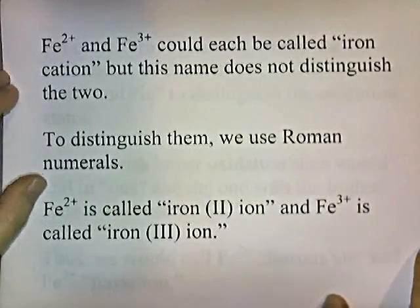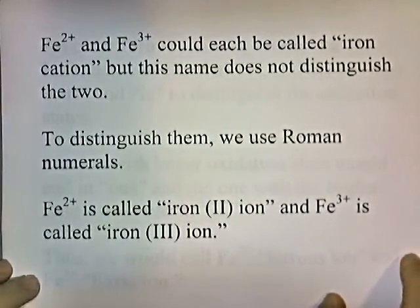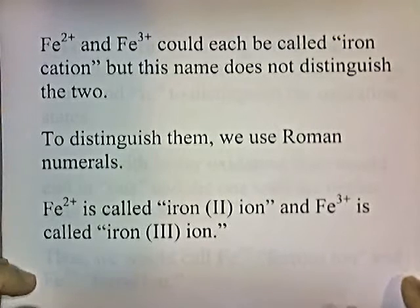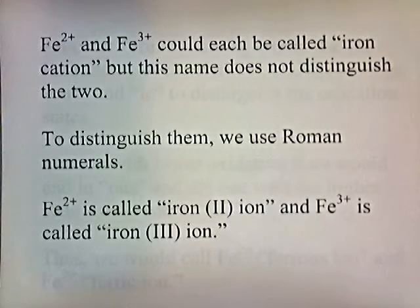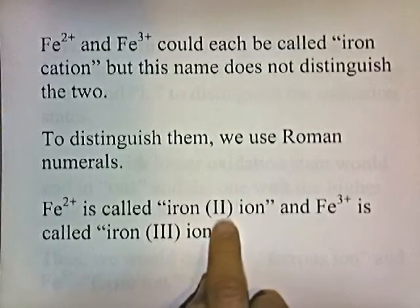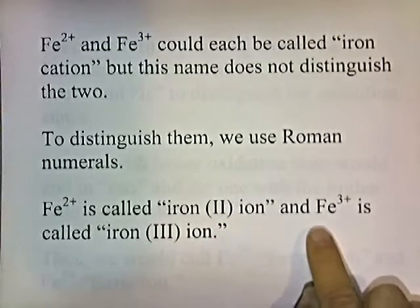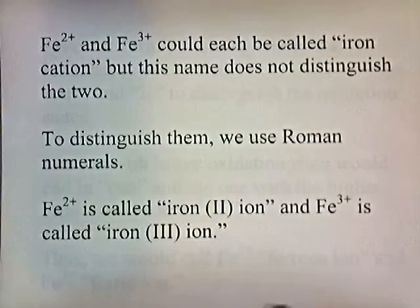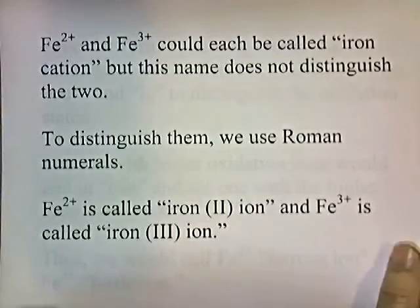Fe2+ and Fe3+ could each be called iron cation, but this name doesn't distinguish the two. To distinguish them we use Roman numerals. Fe2+ is called iron 2 ion and Fe3+ is called iron 3 ion.